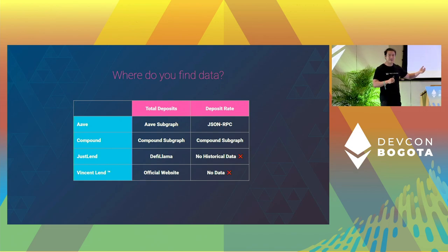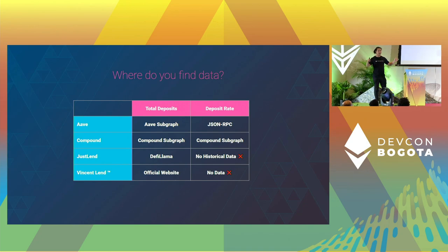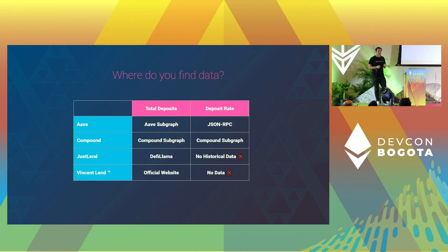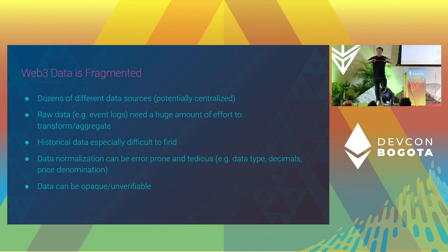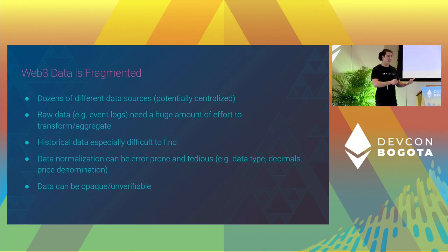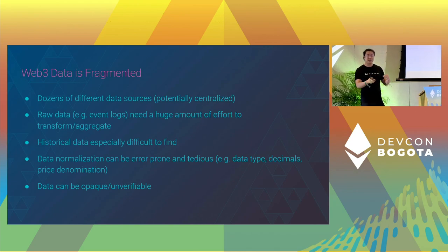If you're lucky, there's a subgraph you can already use that has all that data. If not, you might have to work with JSON RPC APIs and transform and aggregate all of that data yourself. And for each of that data, you probably also need a data adapter to normalize it so that your application can use it. The point I wanted to make here is that the Web3 data space is very fragmented. There are dozens of different data sources that focus on different parts or kinds of data.